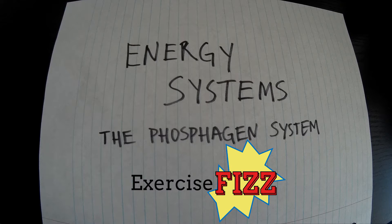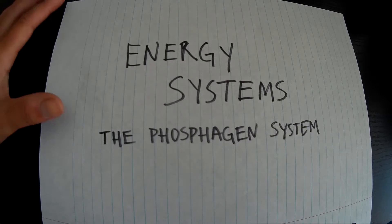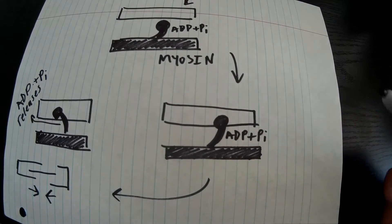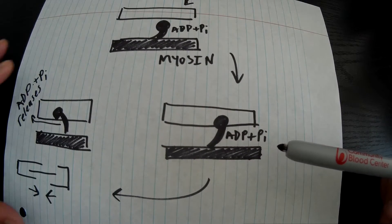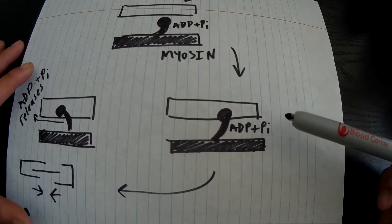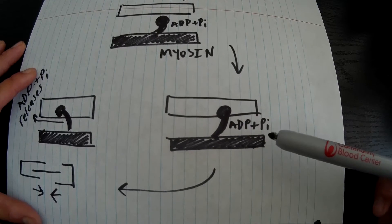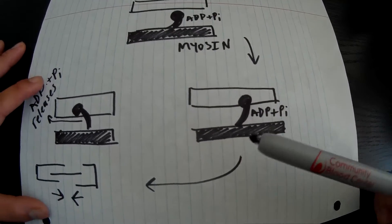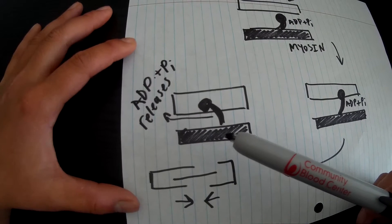Hey everyone, we are going to talk about the energy systems today, most specifically the phosphagen system. Before we get started, we're going to take another look at the sliding filament theory. So ADP and Pi, which is adenosine diphosphate and phosphate, are attached to the myosin head in order for the power stroke to occur.